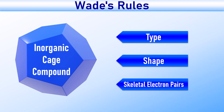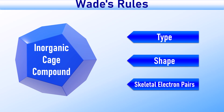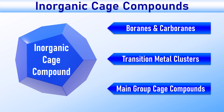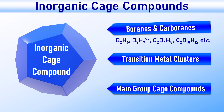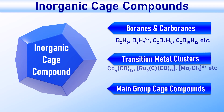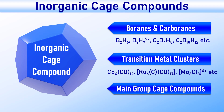Wade's Rules are used to determine the type, shape, and number of skeletal electron pairs of inorganic cage compounds. In exams, most of the questions are focused on these three aspects. Using Wade's Rules, we can determine the type and shape of inorganic cage or cluster compounds such as boranes, carboranes, transition metal clusters, and main group cage compounds as shown on the slide.